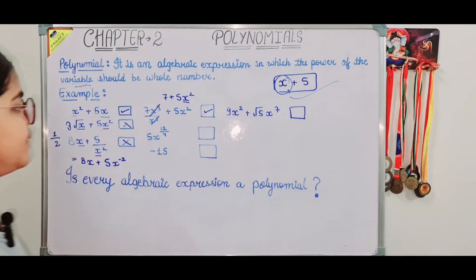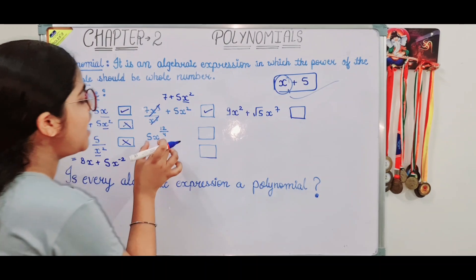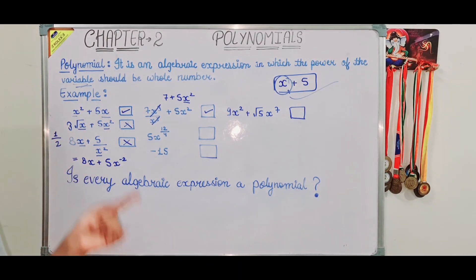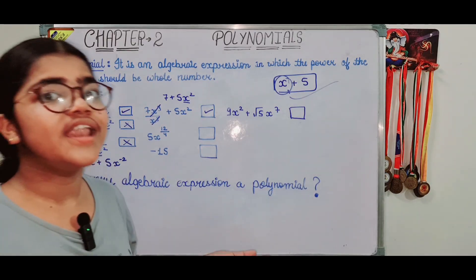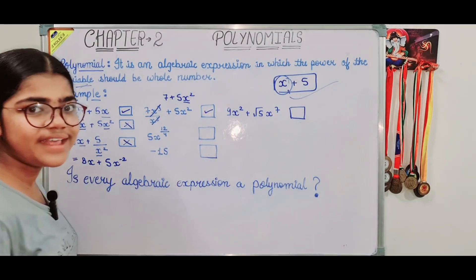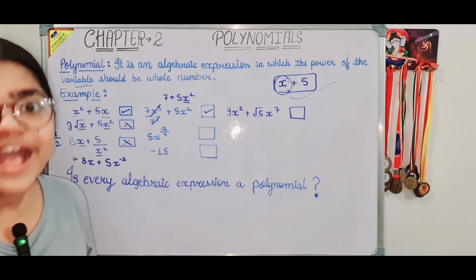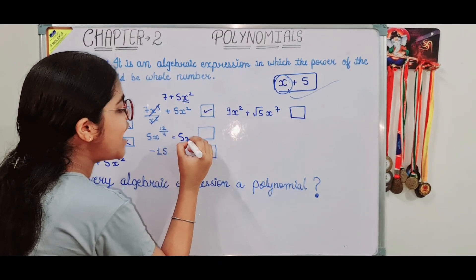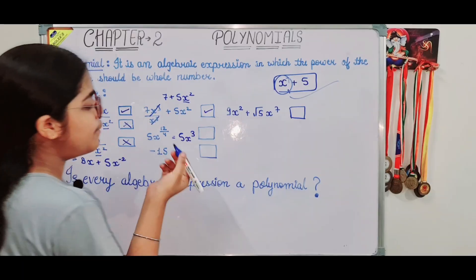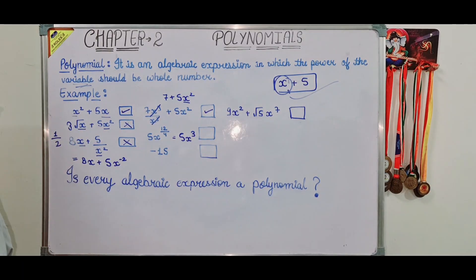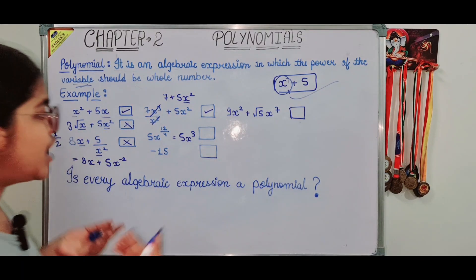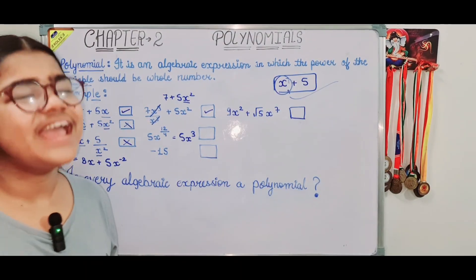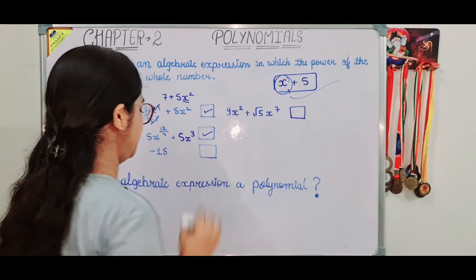Next example: 5x to the power of 12 upon 4. This is just to confuse you. 12 divided by 4 equals 3, which is a whole number. So the power simplifies to 3, and this is a polynomial.